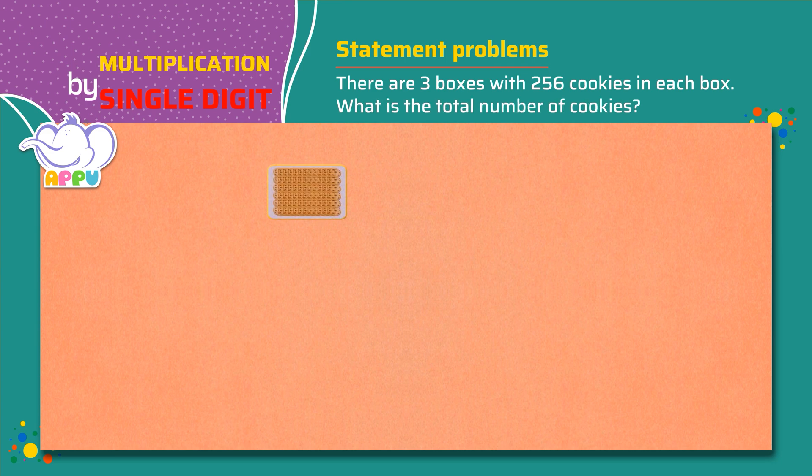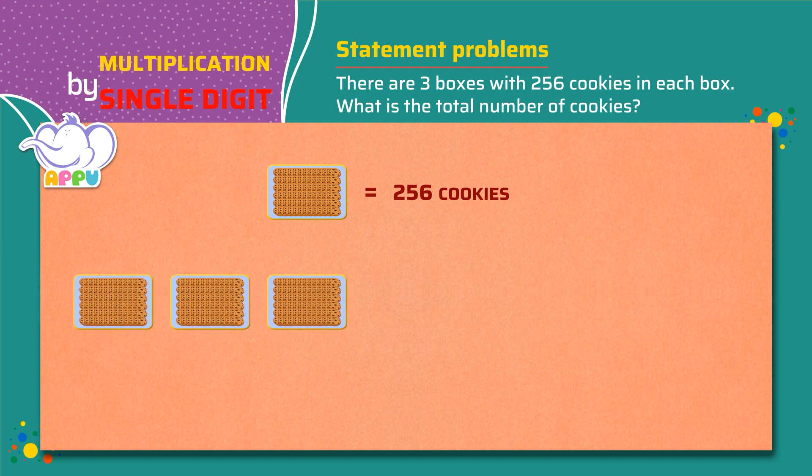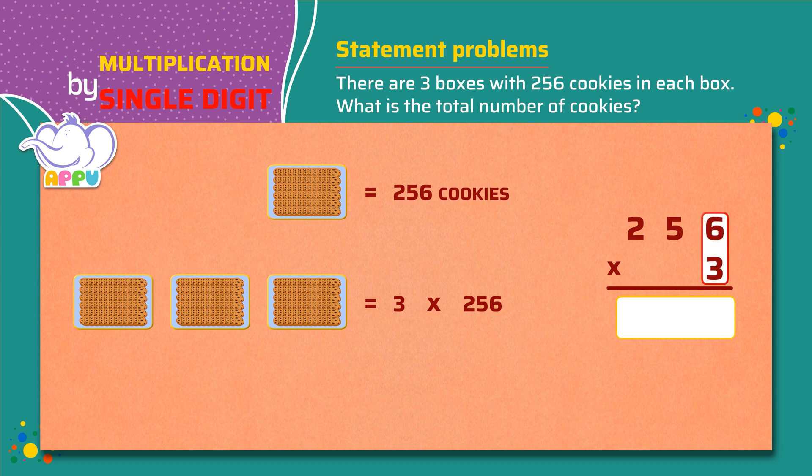Number of cookies in a box, 256. So three boxes will have 3 times 256 cookies. Multiply the number in the ones place by 3, which is 6 times 3 equals 18. We keep 8 and carry 1.